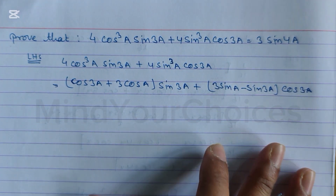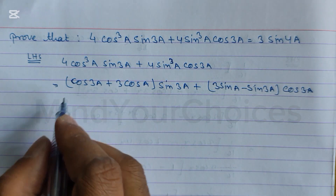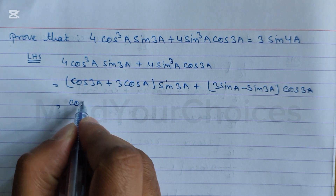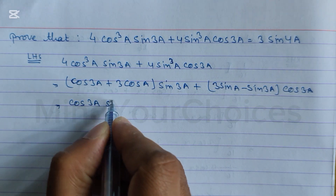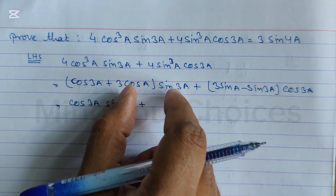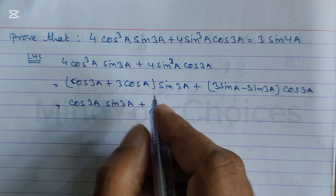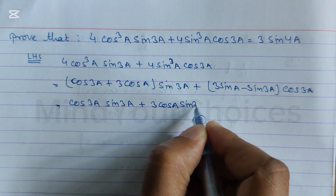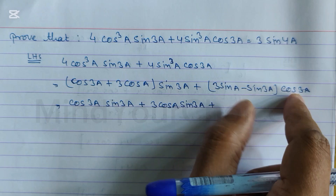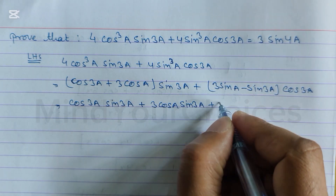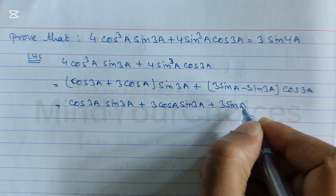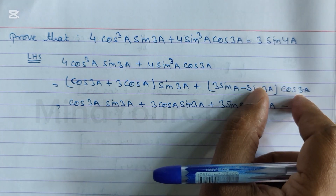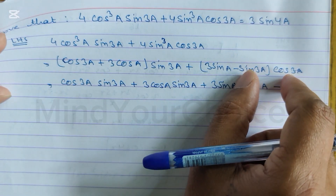After this, let's multiply. We multiply to get: cos3a·sin3a, then plus 3cosa·sin3a, then plus 3sina·cos3a, then minus sin3a·cos3a.